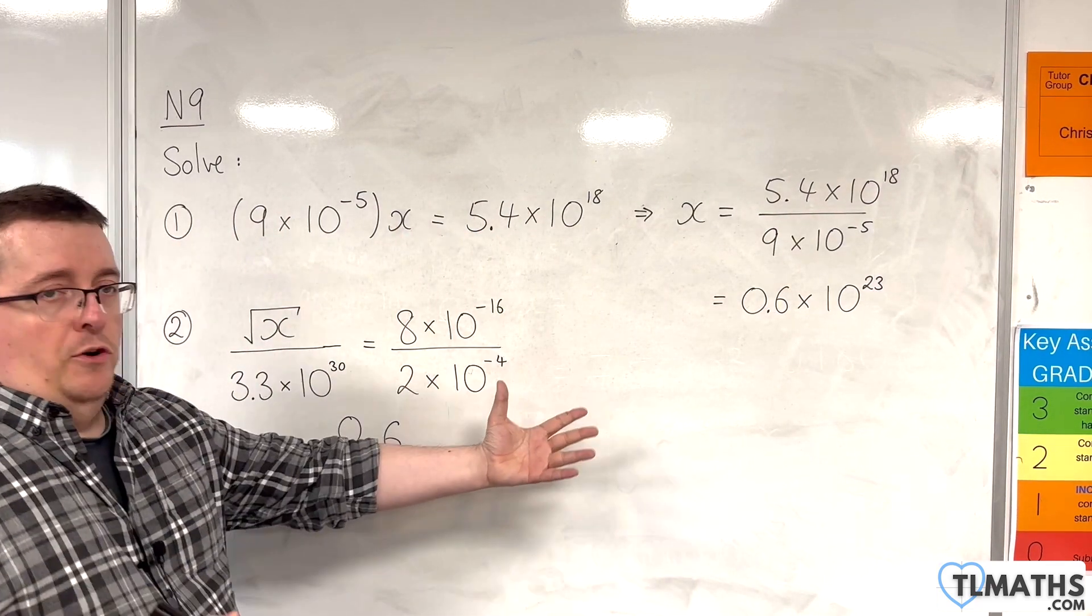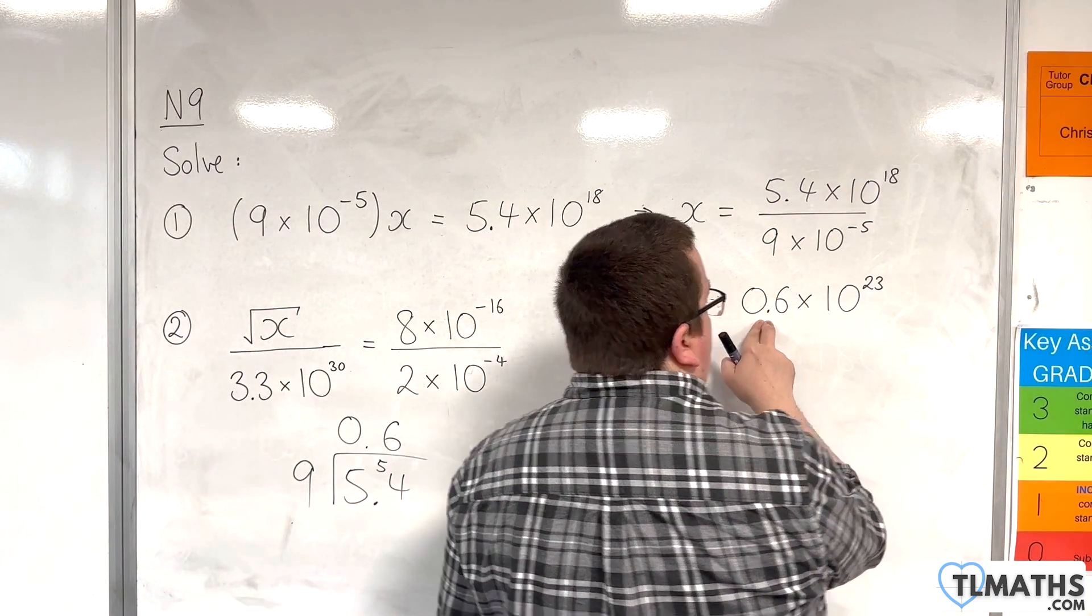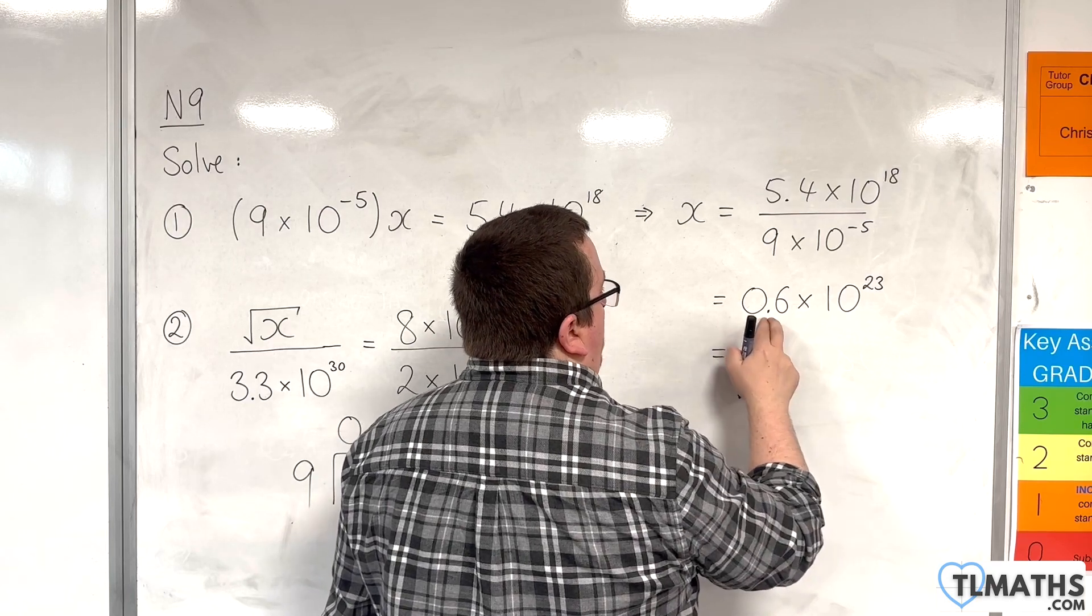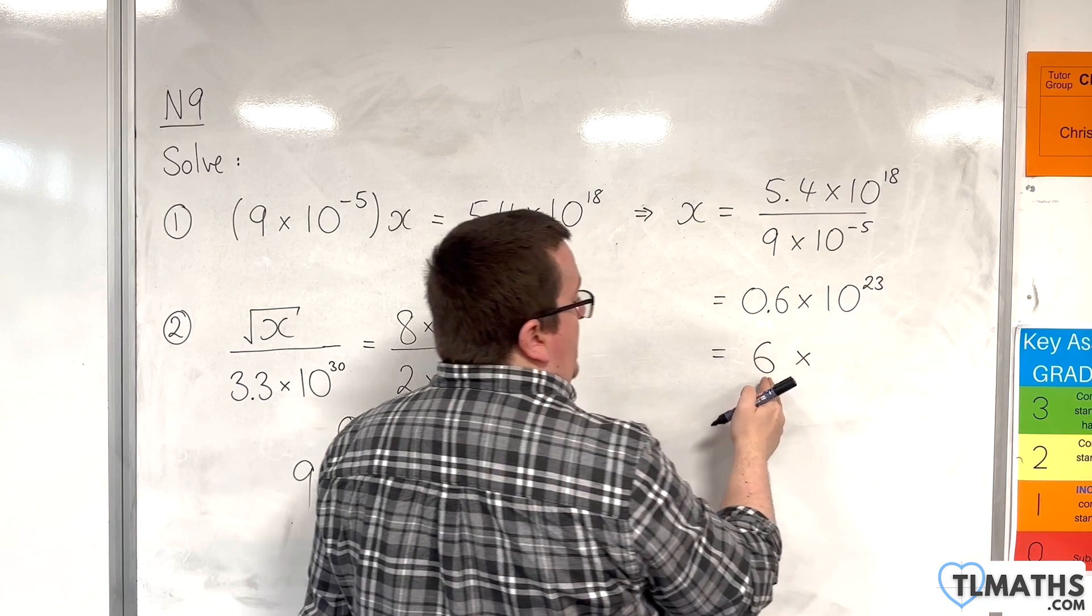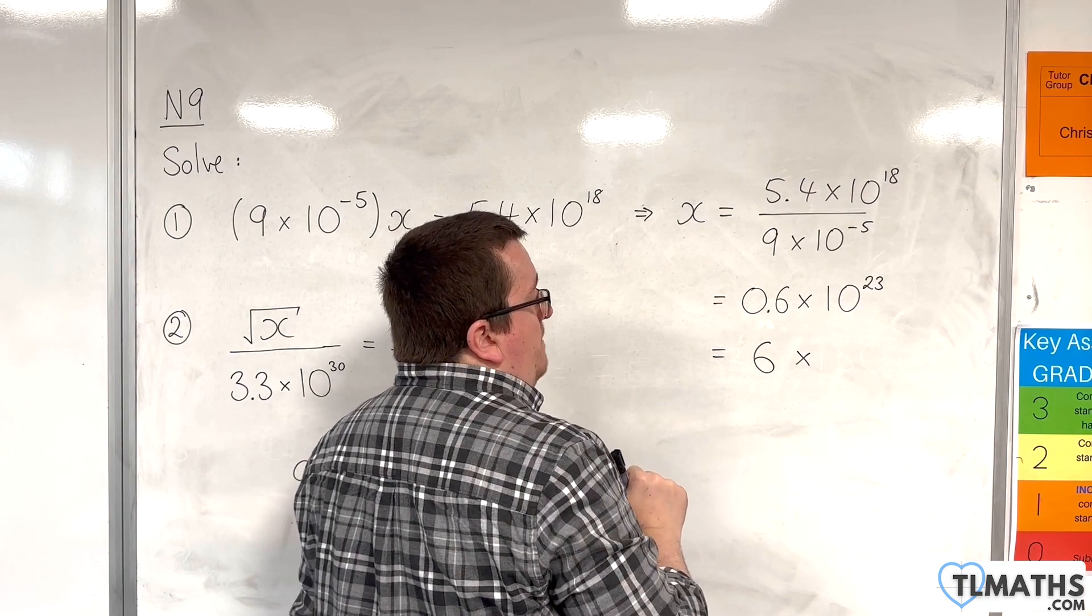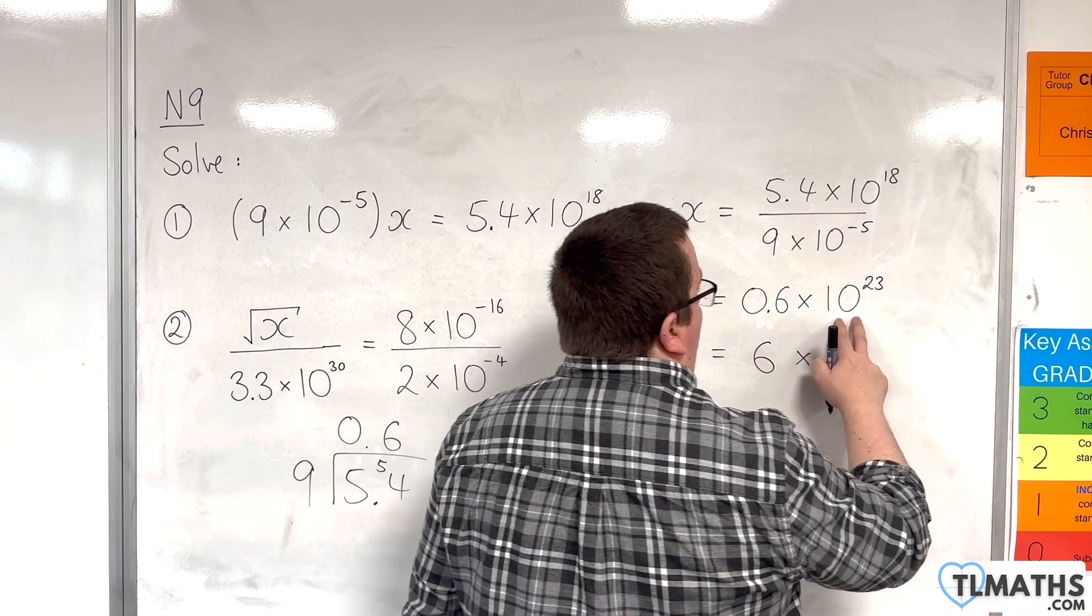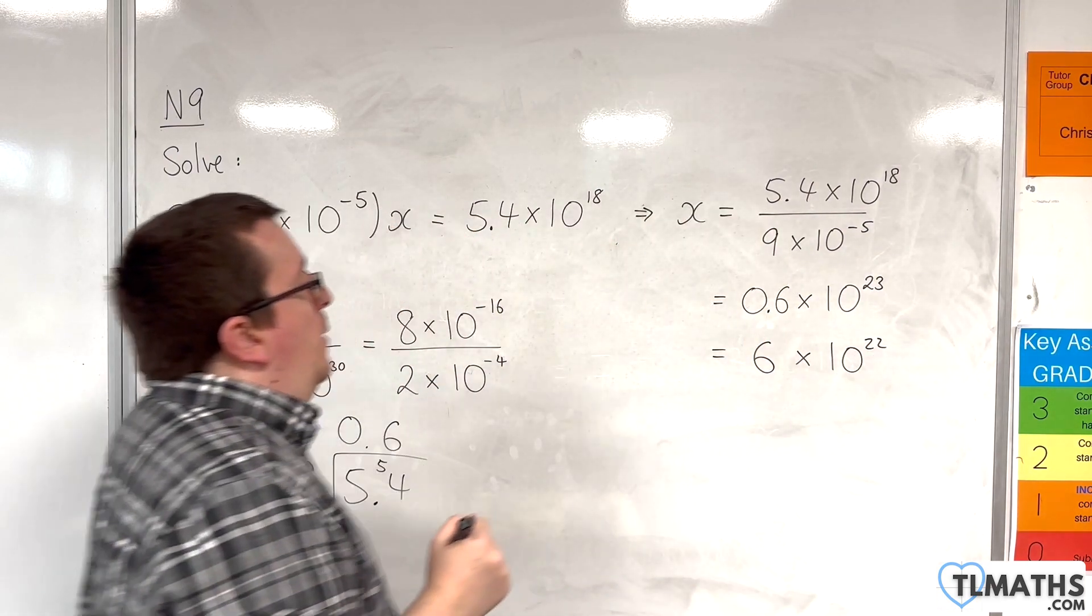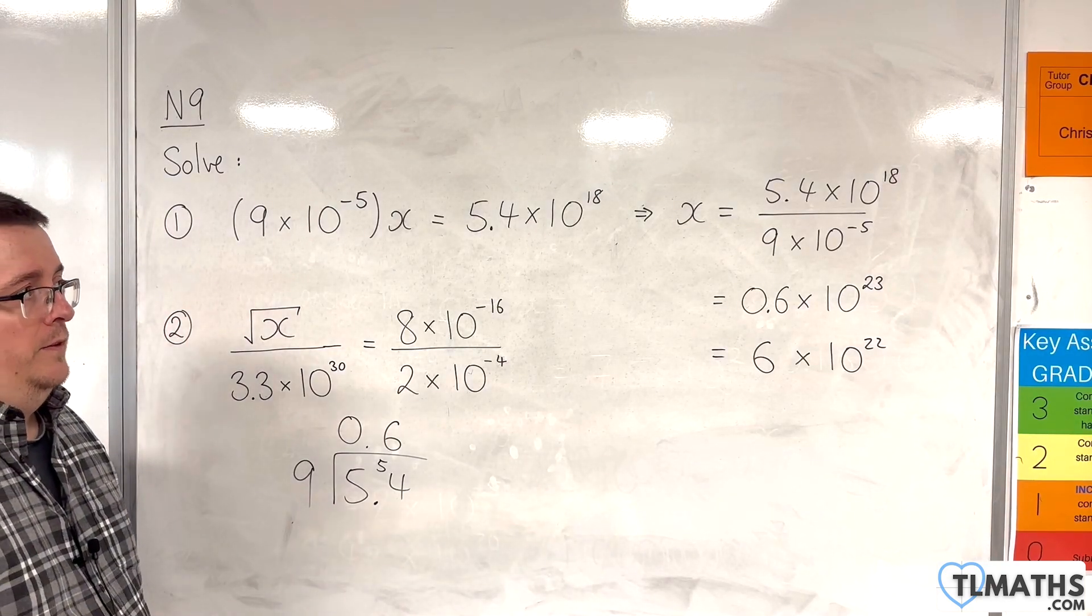But that is not in standard form, because this number is not greater than or equal to 1 or less than 10. So, I need to multiply that by 10 to get to 6. Now, we have a number that is between 1 and 10. But in multiplying that by 10, I need to divide that by 10. So, 10 to the 22. So, our answer is 6 times 10 to the 22 for our value of x.